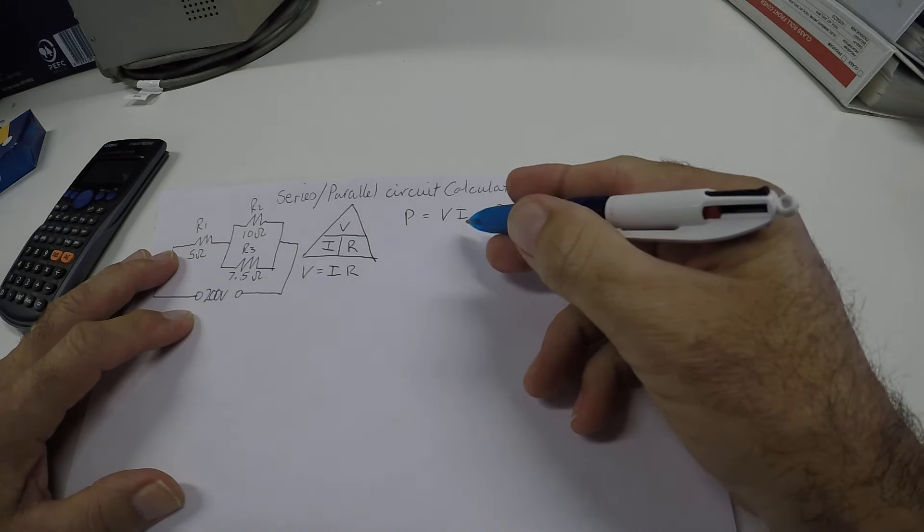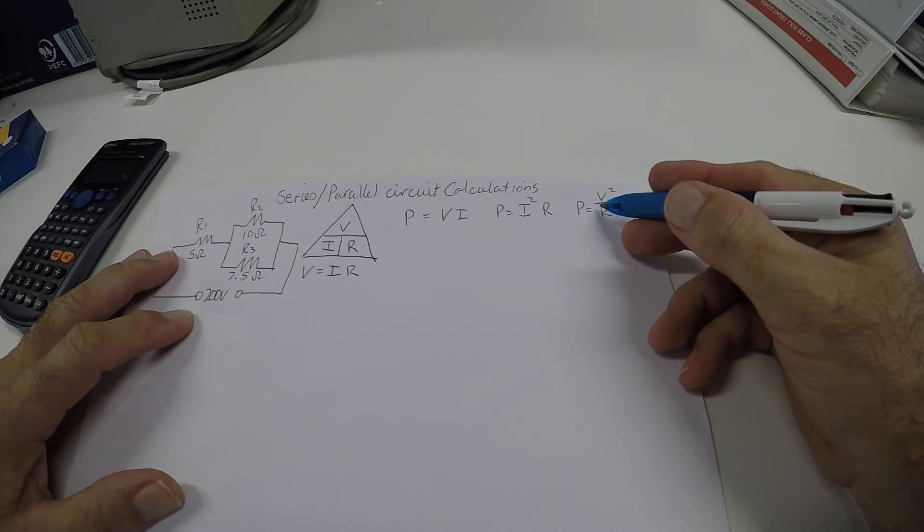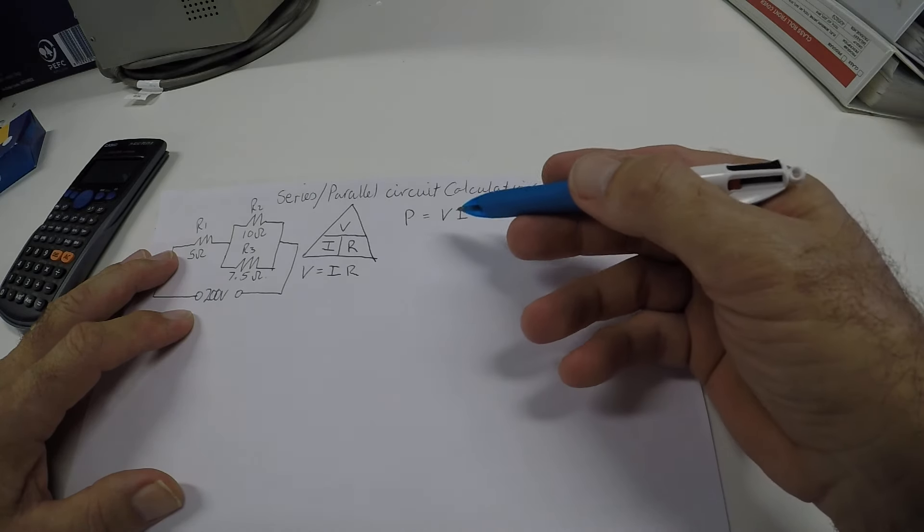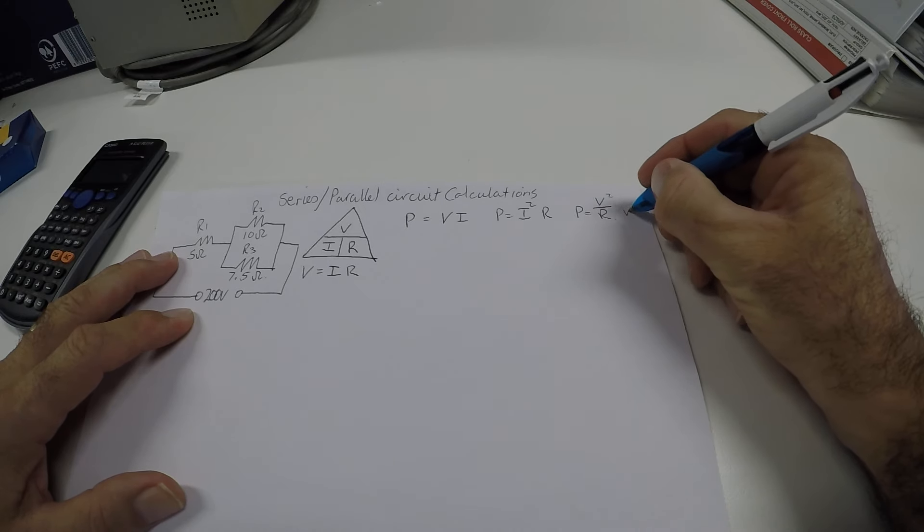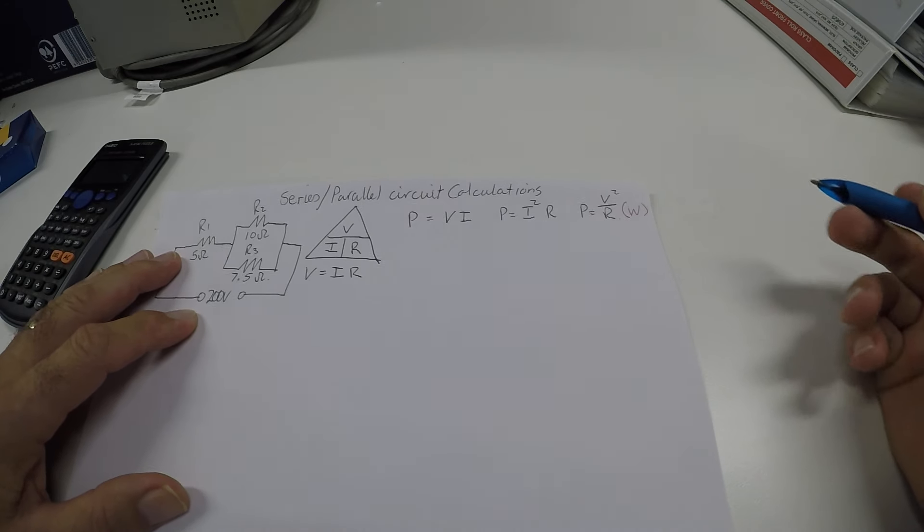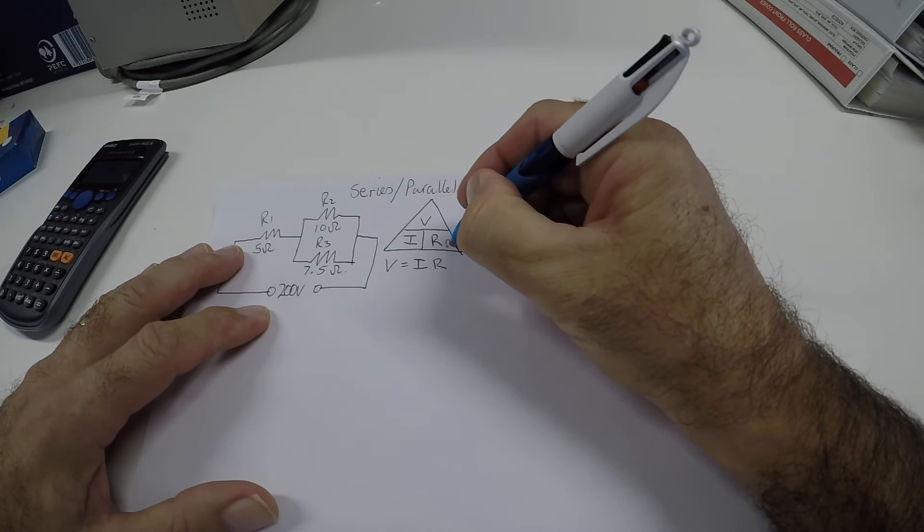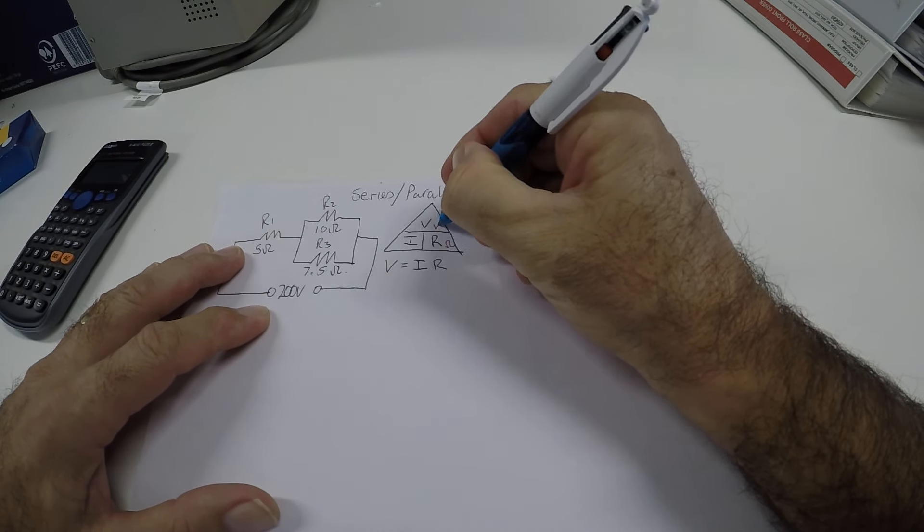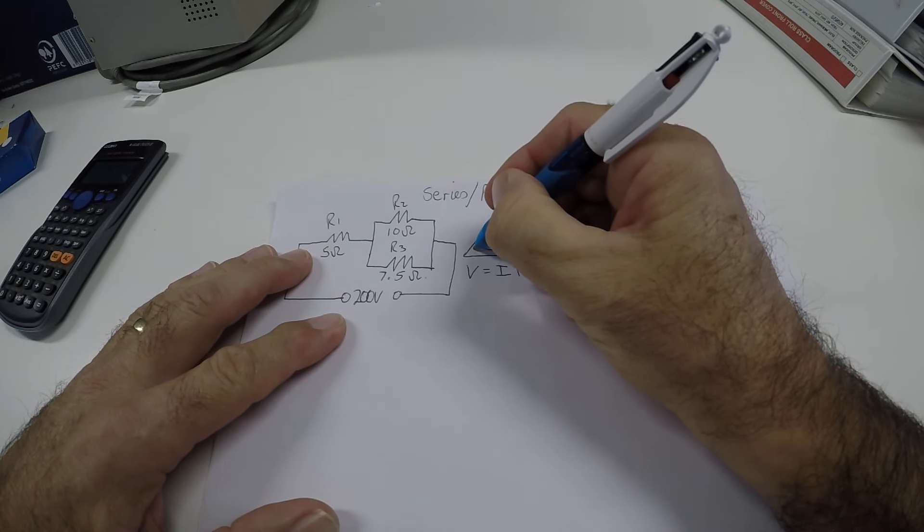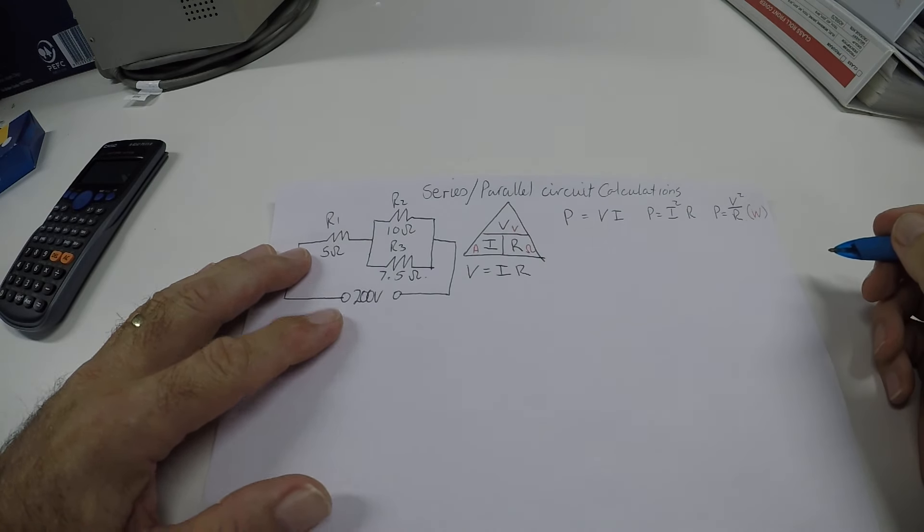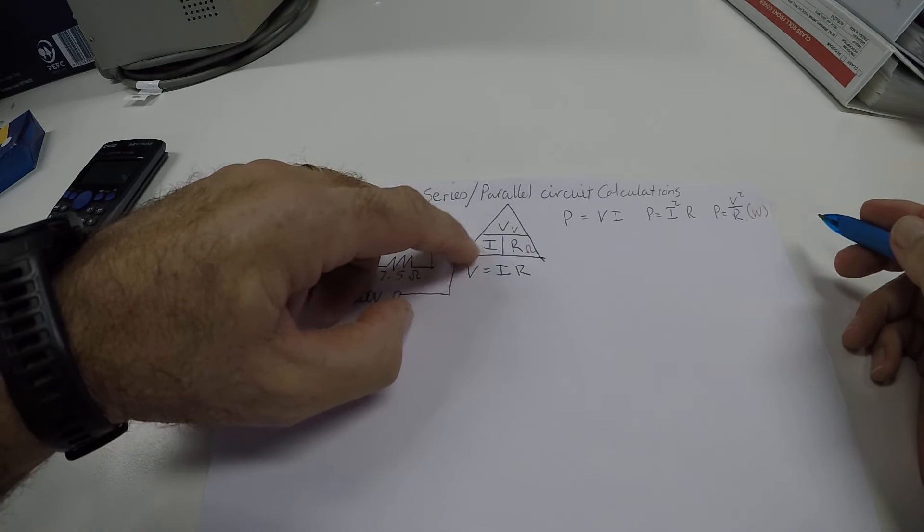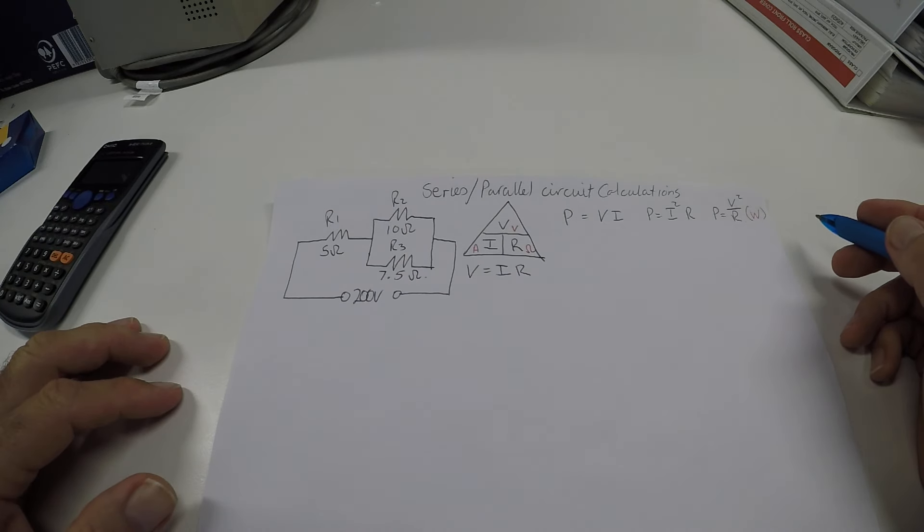The units for power is always in watts. We know that resistance is in ohms, so I'll put a little symbol there. Voltage is V, and current is A. So current is amps, V, and ohms are the resistance.